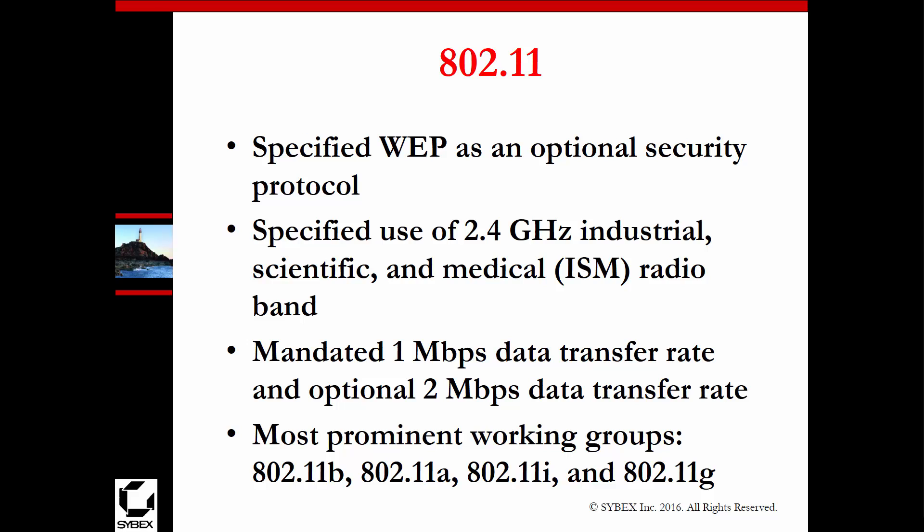802.11 comes in two major flavors for security: WEP and WPA. The first variation, 802.11, only used WEP, operated at 2.4 GHz, and was about 1 megabit per second. It predominantly worked as one of the bases for things like 802.11a, b, i, and g.